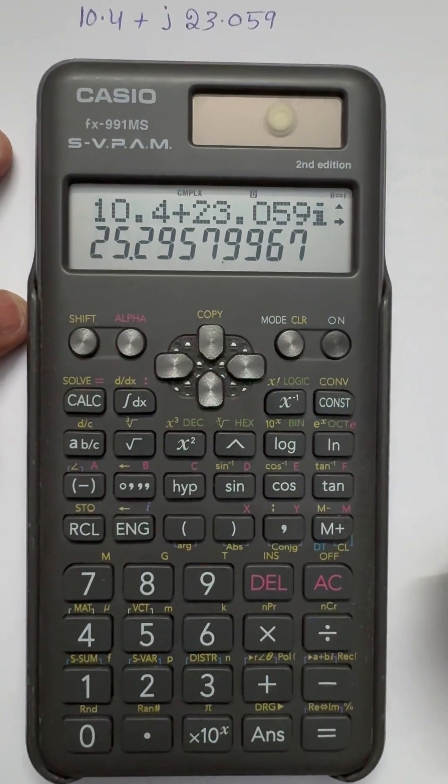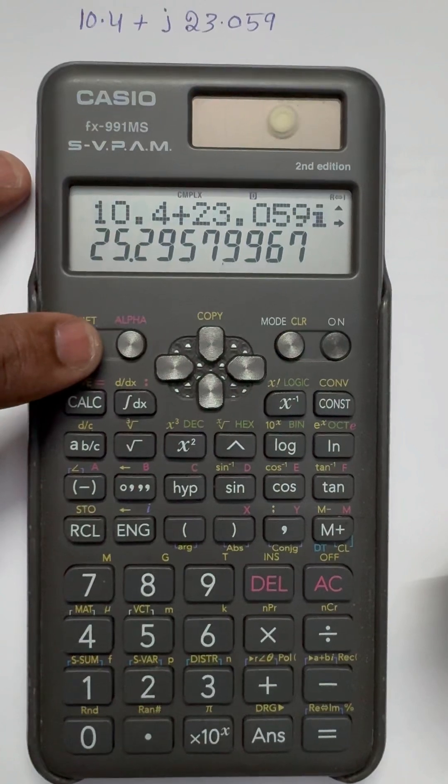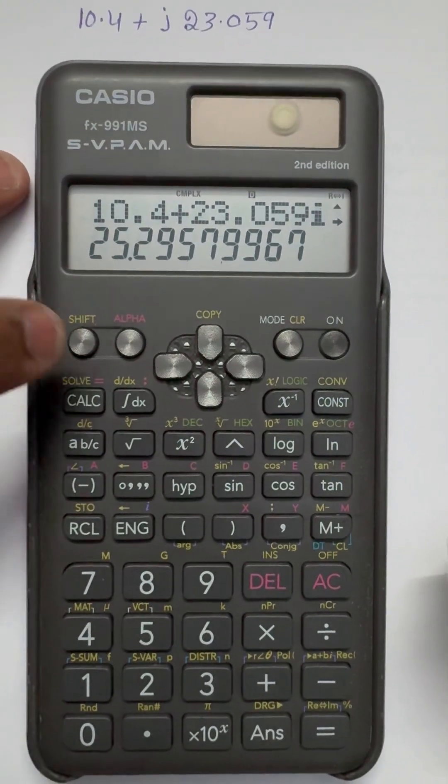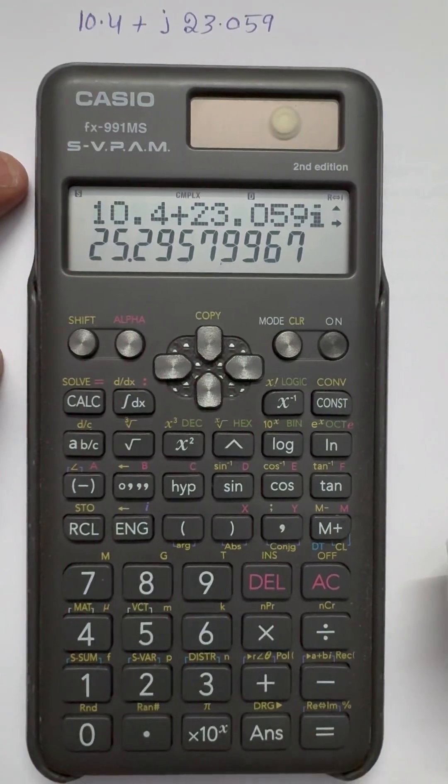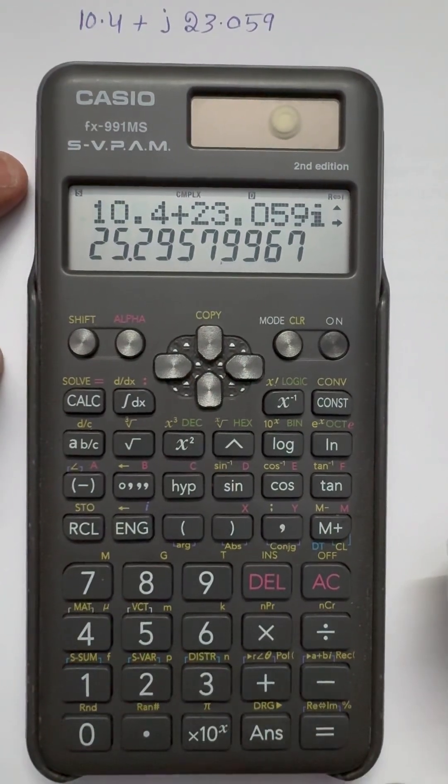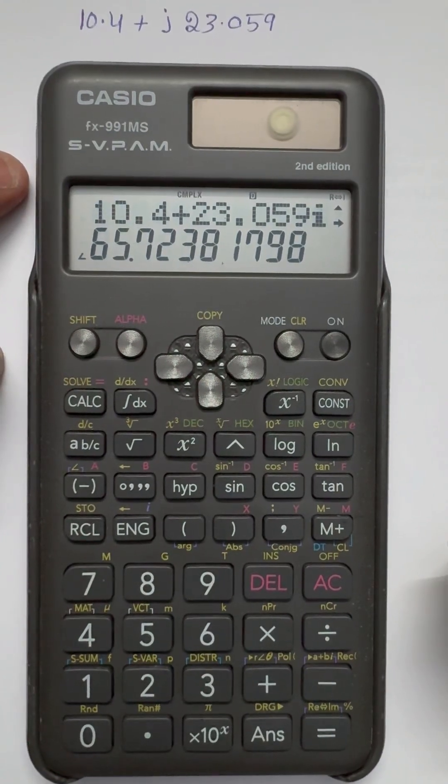And to get an angle, again press shift. Here is shift, press shift equal to. Again equal to, here it is equal to. That is the angle, 65.72.